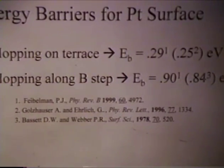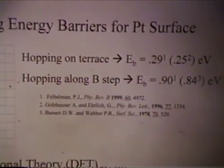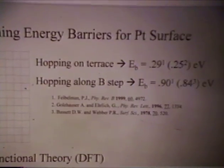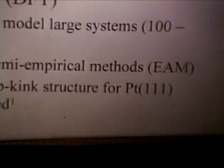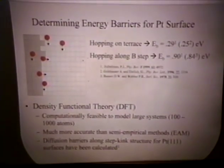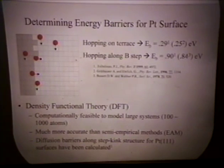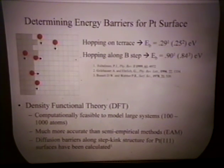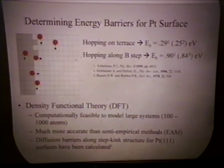We're interested in obtaining a detailed quantitative description of the step structures. To do this, we need to know the energy barriers that atoms hop on the surface. As shown in this schematic diagram, there are many different types of hopping and diffusion moves that can be performed on the surface. We first need to identify the ones we're interested in and then get accurate predictions of their values. This is difficult to do experimentally, and one attractive alternative is density functional theory, which is a first-principles method that allows you to accurately calculate these energy barriers.